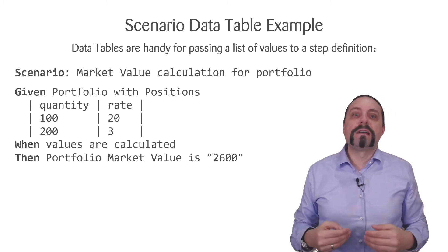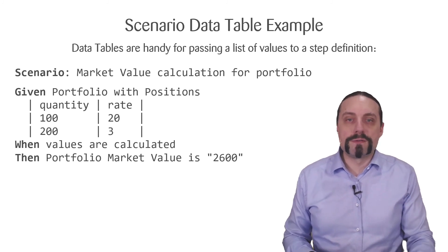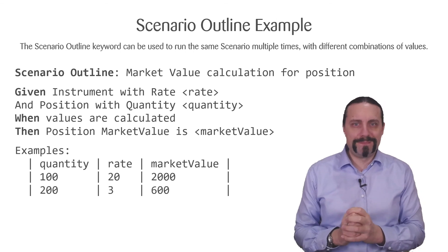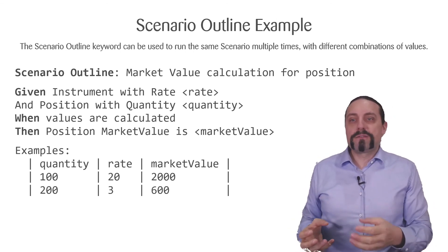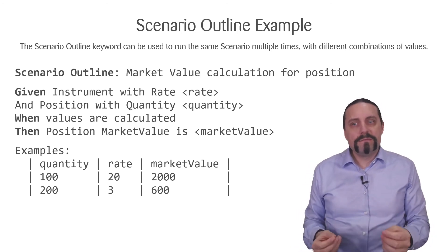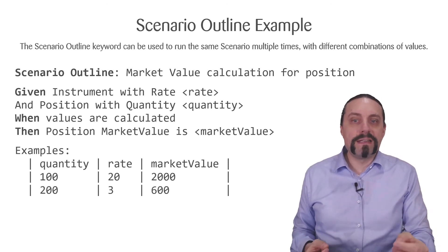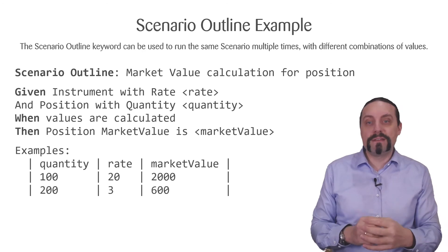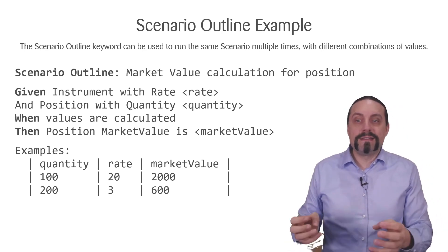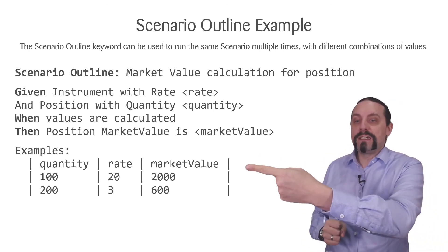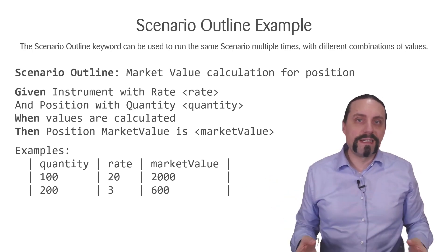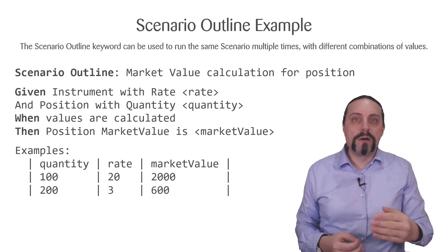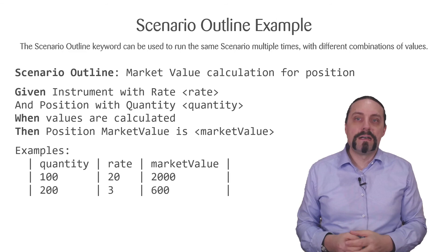Now let's get more advanced. What if you have multiple input value variables? You use so-called data tables, which allow you to add multiple values in one step definition — for example a market value calculation for a whole portfolio with multiple positions. If you want to execute one scenario multiple times with different combinations of values, you create a scenario outline with placeholder variables like rate and quantity, and define examples below — which can even be generated from Excel and can get quite large.